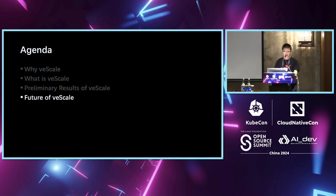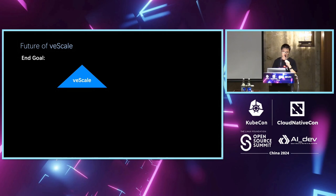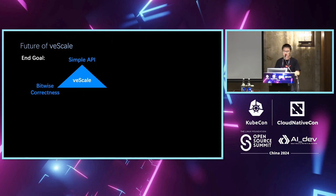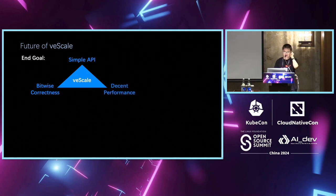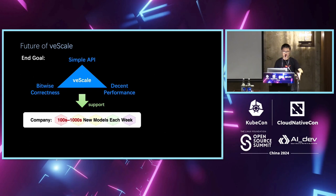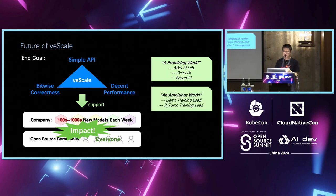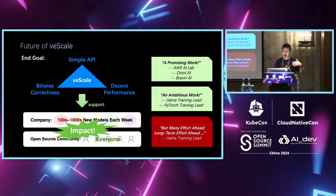In the final part, I'll discuss the future of V-Scale. The end goals are three things: making our APIs as simple as possible so users can easily develop and maintain their work; guaranteeing bitwise correctness; and delivering decent performance. With all three together, we can provide solid support not just for TikTok's business but also for the open source community.